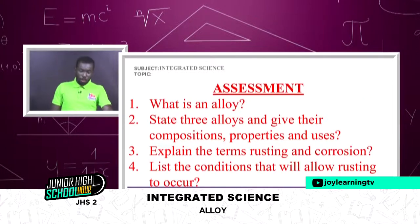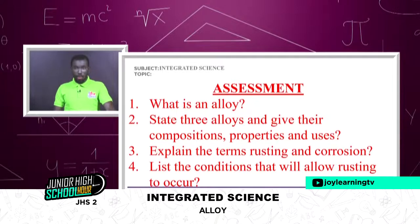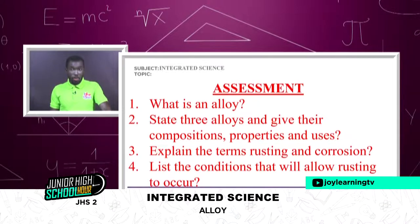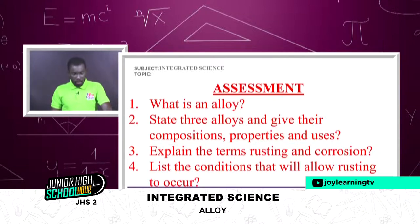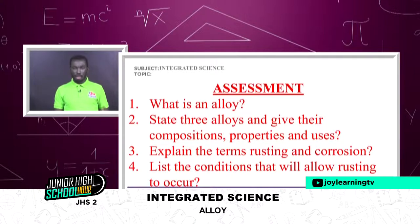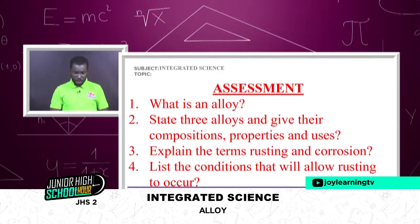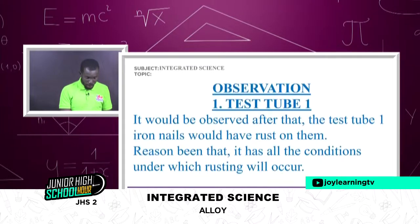Now for assessment. Question one: what is an alloy? Question two: state three alloys and give their compositions, properties, and uses. Question three: explain the terms rusting and corrosion and give the differences between them. Question four: list the conditions that will allow rusting to occur.